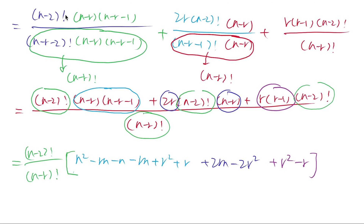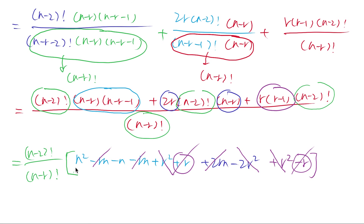We can cancel: plus 2rn minus rn minus rn cancels; minus 2r squared plus r squared plus r squared cancels; plus r minus r cancels. So in the end we just have n squared minus n.